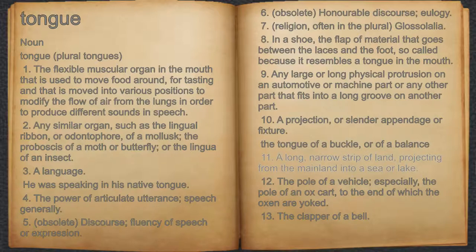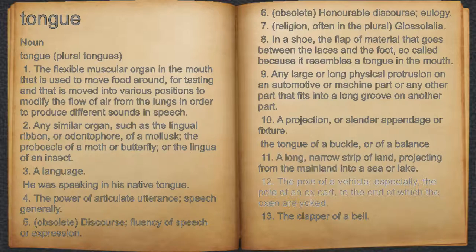11. A long, narrow strip of land projecting from the mainland into a sea or lake. 12. The pole of a vehicle, especially the pole of an ox cart, to the end of which the oxen are yoked.